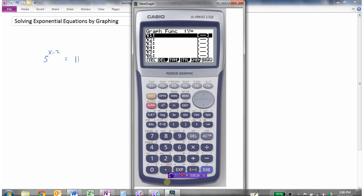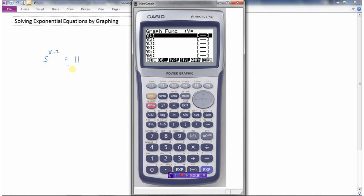So I can enter this as 5 to the power of—now because I've got two things in my exponent here, x minus 2, you want to make sure that you have brackets around the exponent. And then my other equation is going to be 11. So I'm going to graph the left side as y1 and I'm going to graph the right side as y2.